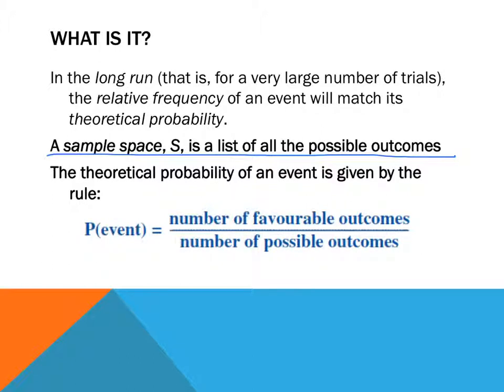Theoretical probability, or in theory how probable something is, is given by this rule: P(event) equals the number of favourable outcomes over the number of possible outcomes. This is theoretical probability, and I work it out by dividing the number of favourable outcomes by the number of possible outcomes.